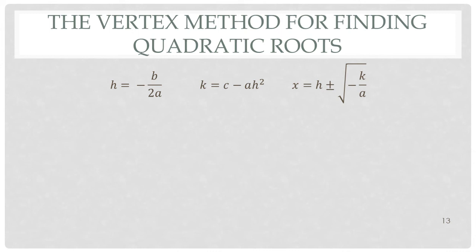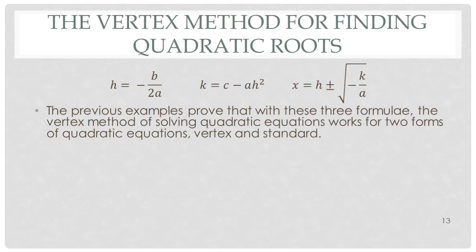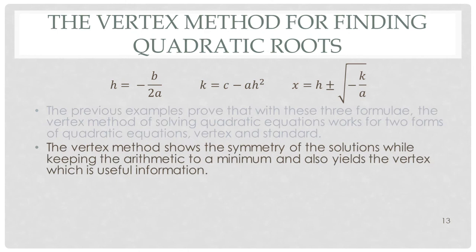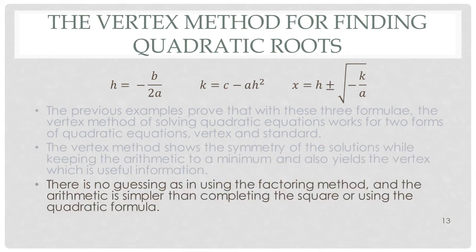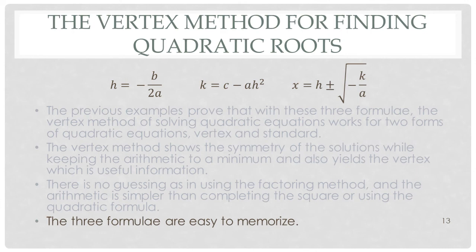So here it is — the vertex method for finding quadratic roots. With these three formulas, the vertex method works for both forms of quadratic equations: the vertex form and the standard form. The nice thing about the vertex method is that it shows the symmetry of the solutions and keeps the arithmetic to a minimum. It also gives you the vertex, which is useful information — quite often when a student is told to find the roots, they are also told to find the vertex. There is no guessing as in the factoring method, and the arithmetic is simpler than completing the square or using the quadratic formula. And I think these three formulas are easy to memorize — most of us have already memorized the first one, so we just have those other two, and they are quite straightforward.